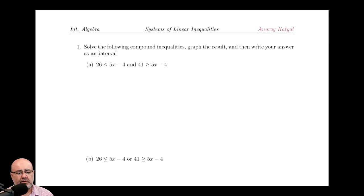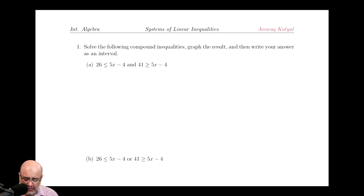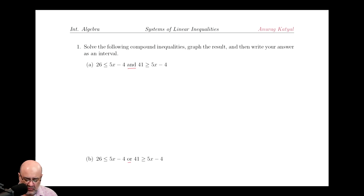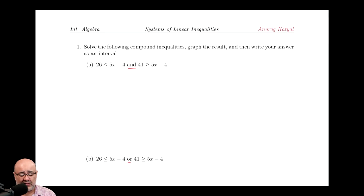Hey guys, here are the solutions to the first six problems. We have linear inequalities in one variable, and we have to consider whether we have AND or OR in the problems. I'm just going to walk through the solutions, so if you have any questions, feel free to reach out on Slack or just send me a message.